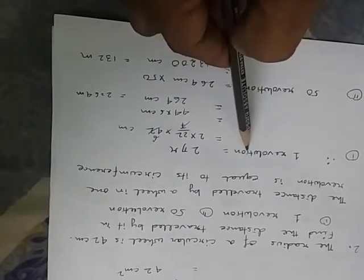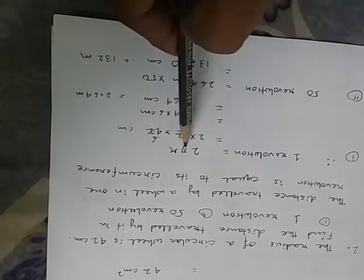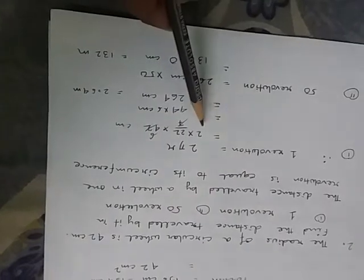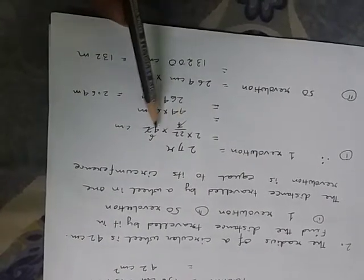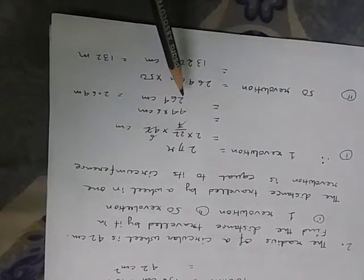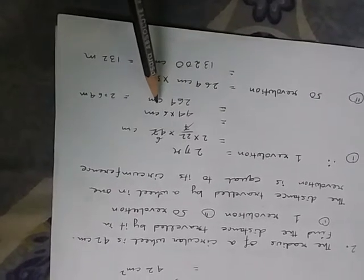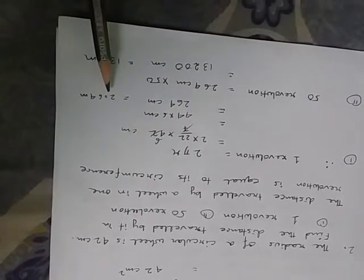Therefore 1 revolution is equal to 2 pi r. So 2 into 22 by 7 into 42, here it is coming 264 cm. So which we can write as 2.64 m.